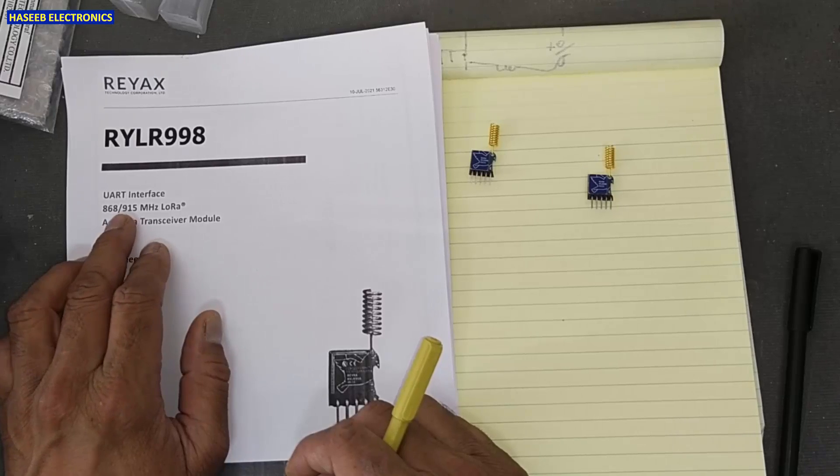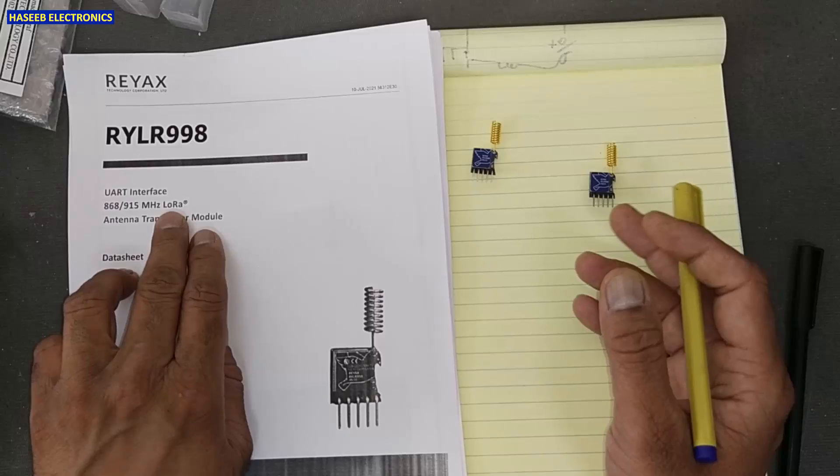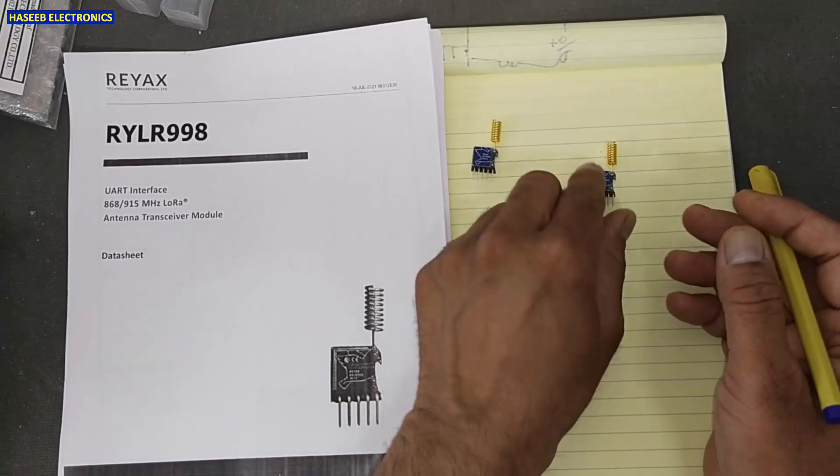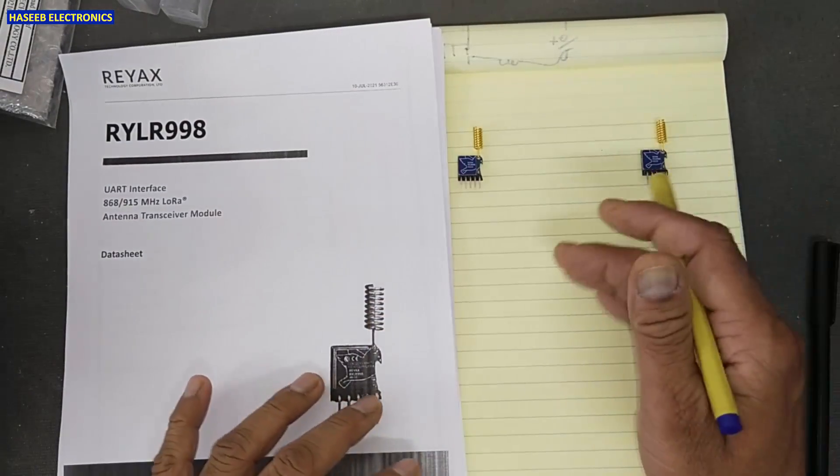Interface module and it works at GSM frequency band. That is wonderful. LoRa, long range antenna transceiver module. What is transceiver? Transmitter receiver. It is long range.